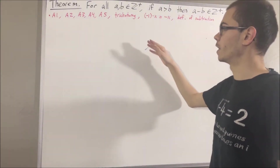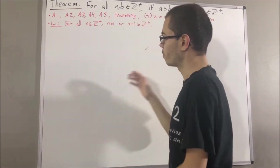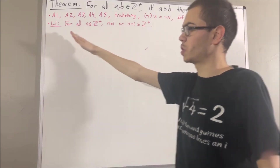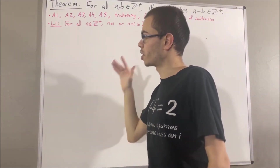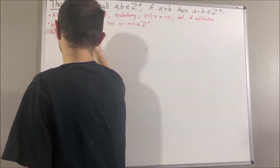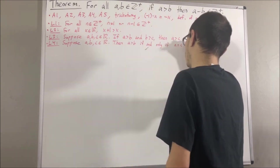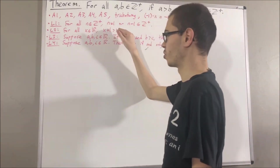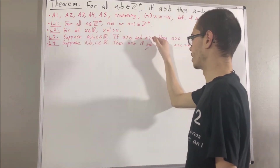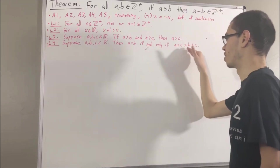Now, a property that we have proven in regards to the positive integers is the following. We have proven for all positive integers n, n is equal to 1, or n minus 1 is a positive integer. And I'll call this result L1. Now, some properties that we have proven in regards to the ordering of real numbers are as follows: for all real numbers x, x plus 1 is greater than x. And also, given real numbers a, b, and c, if a is greater than b and b is greater than c, then a is greater than c. And also, a is greater than b if and only if a plus c is greater than b plus c.